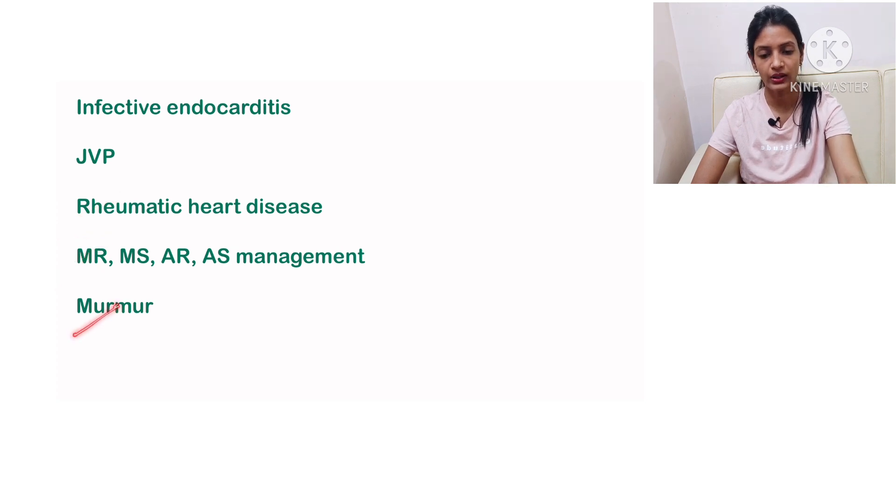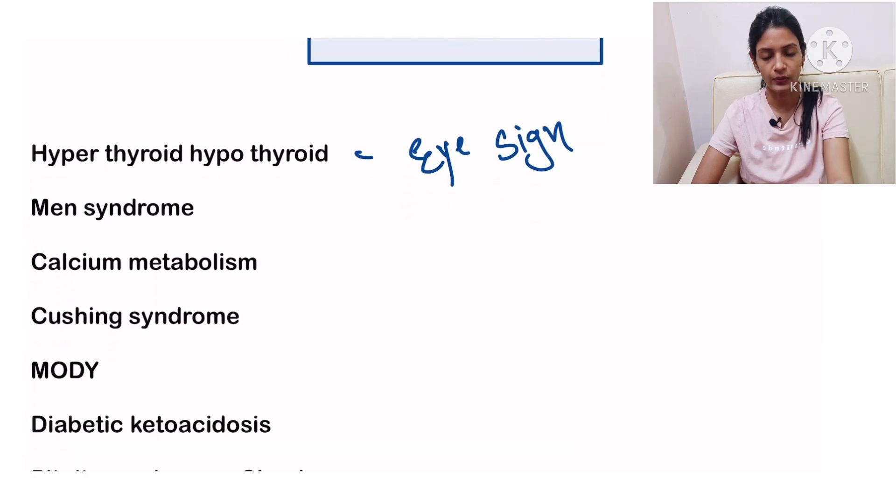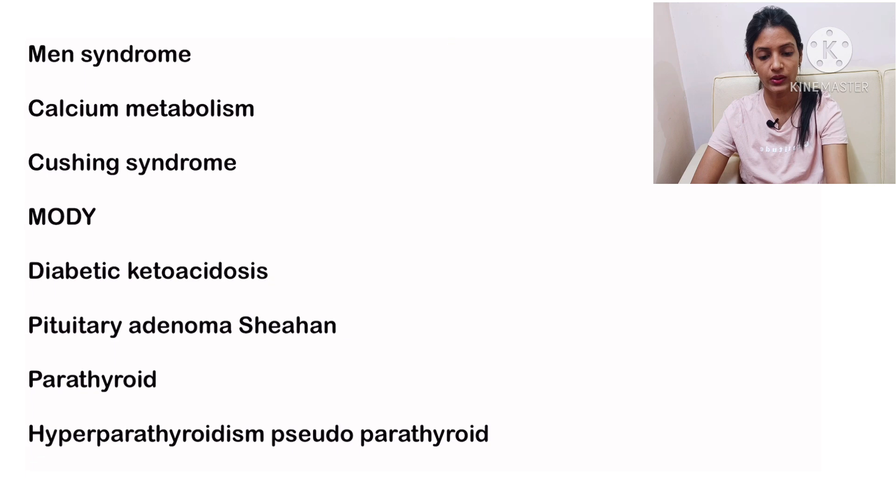Next, move on to endocrine. In endocrine they can ask you hyperthyroid and hypothyroid and the eye changes seen in thyroid, then MEN syndromes, calcium metabolism, Cushing syndrome, MODY, diabetic ketoacidosis, pituitary adenoma, Sheehan syndrome, then parathyroid—they can ask you hyperparathyroidism, pseudoparathyroid, insulin, diabetes mellitus, acromegaly, and pheochromocytoma.